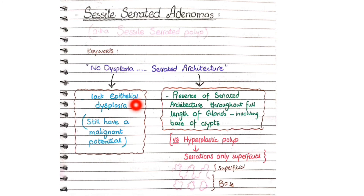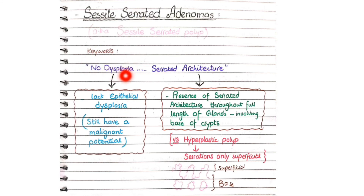The question arises: if they lack epithelial dysplasia, why classify them as adenomas rather than polyps? The answer is that even without epithelial dysplasia, they have malignant potential to transform into colonic adenocarcinoma. That is why they are classified under adenomas, but they differ from typical adenomas in lacking epithelial dysplasia.